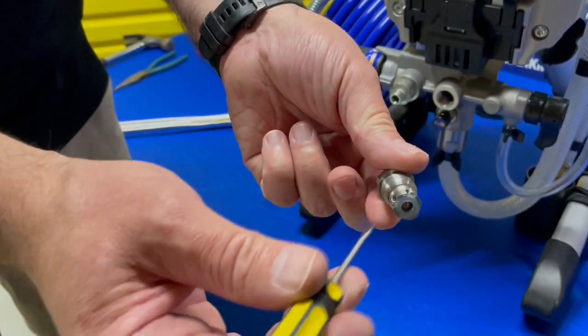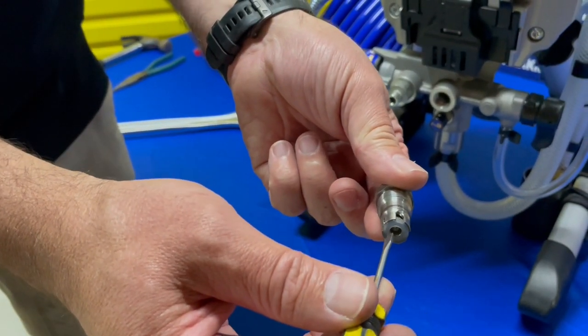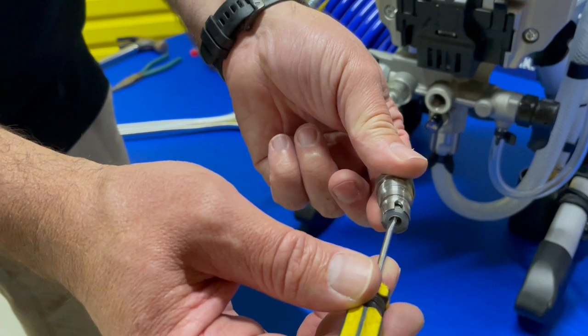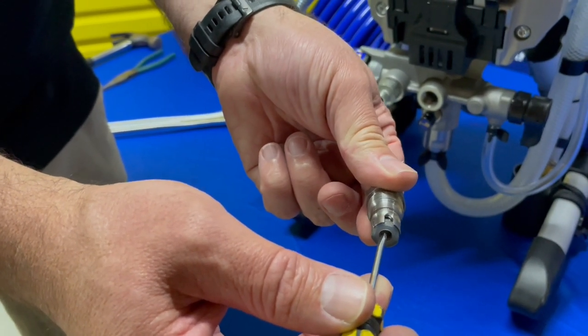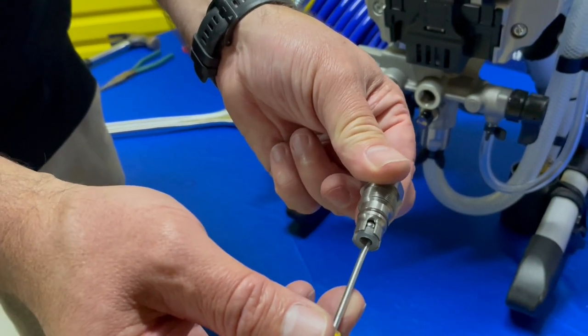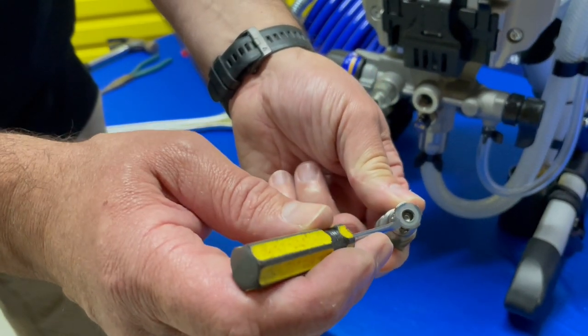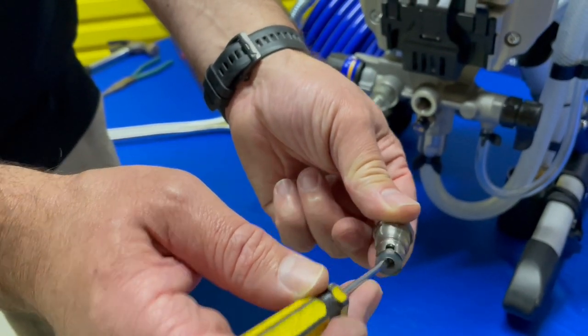...is grab a little screwdriver, gently push the ball in, and run that under some clean running water and give that a good clean out. All it might be is a little bit of paint skin just stuck in there between the ball and seat.